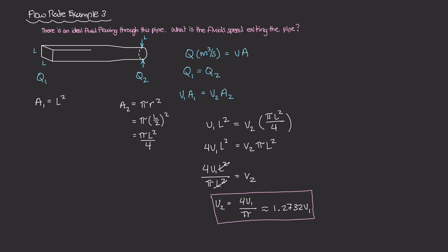And if you think about it, this makes sense because the area of the circular end, so the area right here is a little bit smaller than this L squared square cross-sectional area. And so because this area is a little bit smaller, the velocity has to be higher. It's in order to ensure that the same amount of volume that's entering the system is also leaving the system.